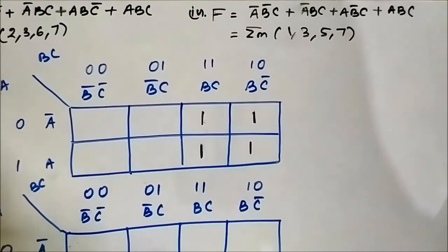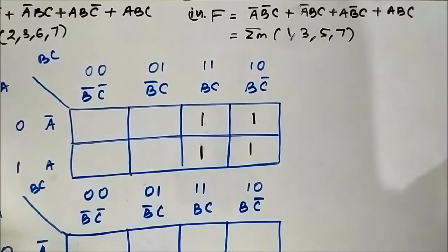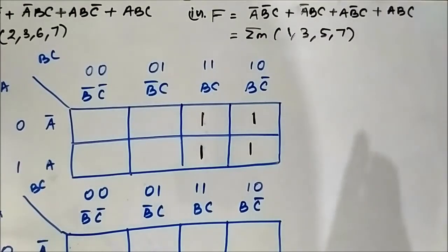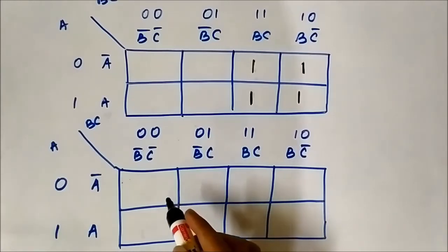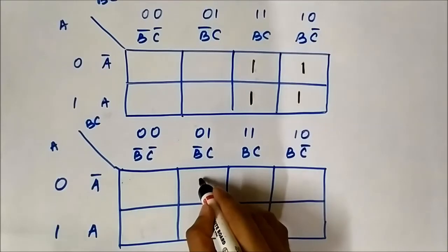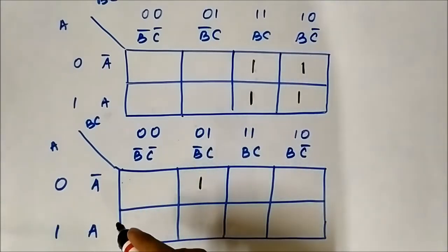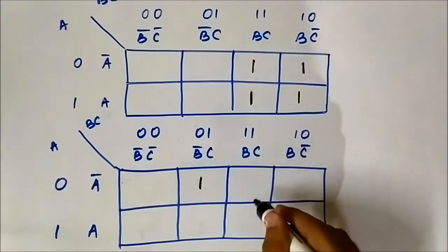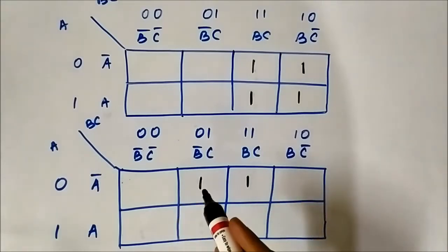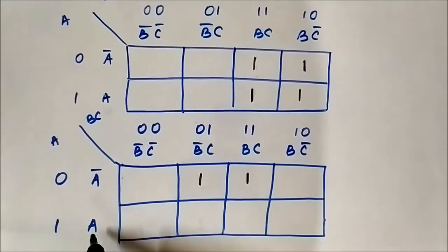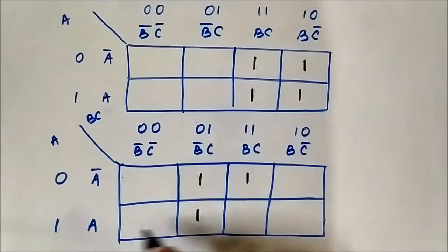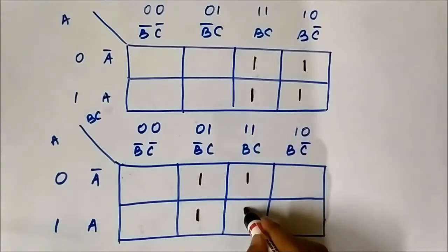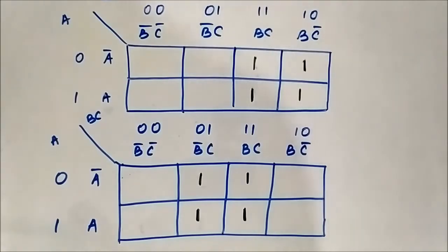The fourth expression is A̅B̅C + A̅BC + AB̅C + ABC, corresponding to min term values 1, 3, 5, 7. For A̅B̅C: A̅ is horizontal, B̅C is vertical — marked 1. For A̅BC: A̅ horizontal, BC vertical — marked 1. For AB̅C: A horizontal, B̅C vertical — marked 1. For ABC: A horizontal, BC vertical — marked 1. So we have mapped this Boolean expression into the three-variable Karnaugh map.